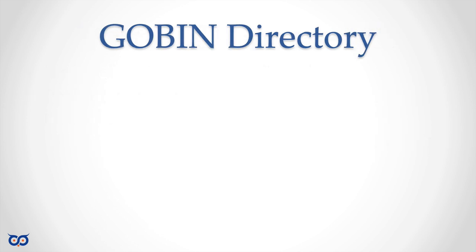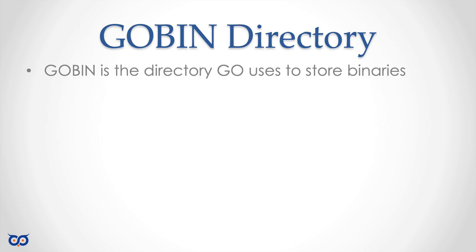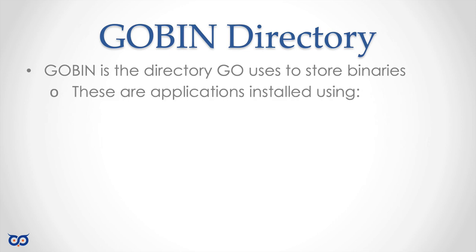Besides your Go source directory, there's a go-bin directory. This is where Go stores binaries. If you have Go source, you can compile it into packages or executables. Those executables go into the go-bin directory. In the Unix tradition, a bin directory stores executables, so by having a go-bin directory and adding it to your PATH, any installed applications are available to run on the command line.